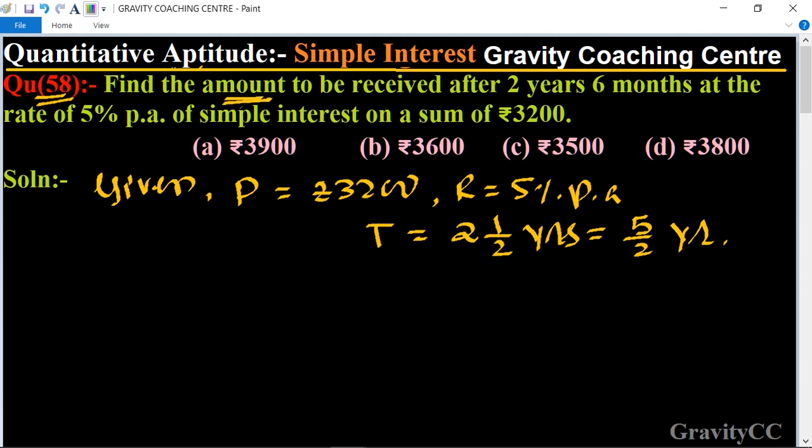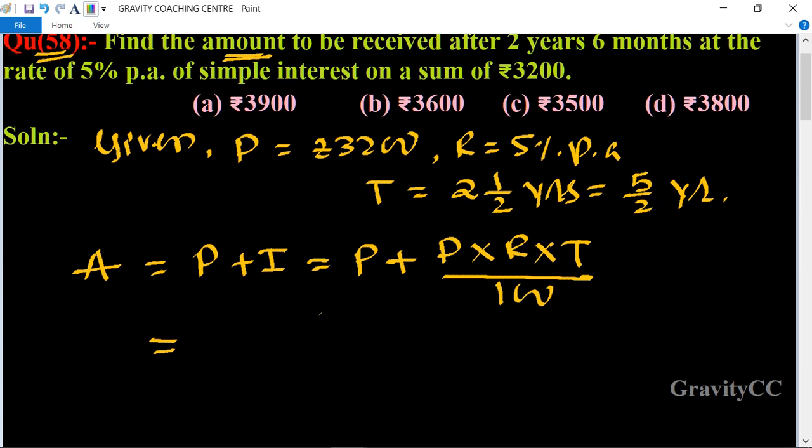We know that the formula of amount A = P + I, which equals P + (P × R × T)/100. Here, principal is ₹3200.